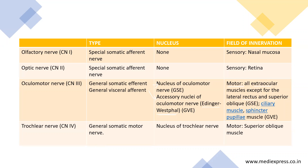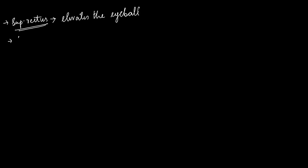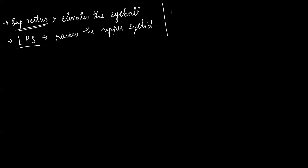Looking at the extraocular muscles in detail: the superior rectus elevates the eyeball — this is an important function to note. The levator palpebrae superioris raises the upper eyelid. The inferior rectus depresses the eyeball; so while the superior rectus elevates, the inferior rectus depresses the eyeball.